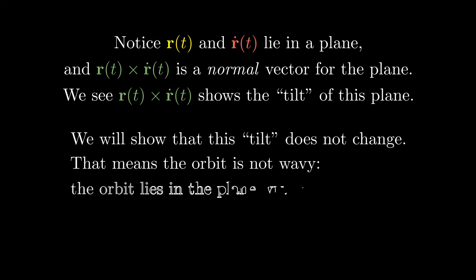We're going to show that this tilt actually doesn't change. That means the orbit's not wavy. The orbit lies in the same plane with r and r dot.